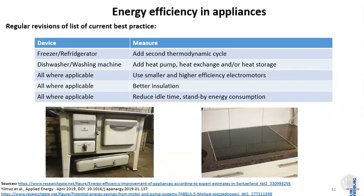A similar story applies to energy efficiency in appliances, where we also have regular reviews of best practices. For freezers and refrigerators, it is now best practice to have a second thermodynamic cycle next to the main one. For dishwashers, we could think of adding heat pumps, heat exchangers, or heat storage — commonly not done yet but considered best practice. The same applies to washing machines. Wherever possible, using smaller and higher-efficiency electric motors, better insulation, and reducing idle time of gadgets and devices is an efficiency measure.